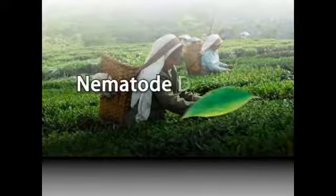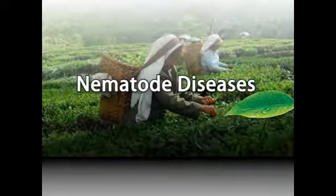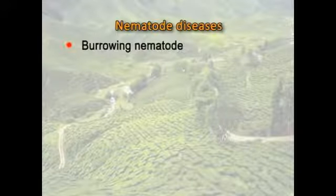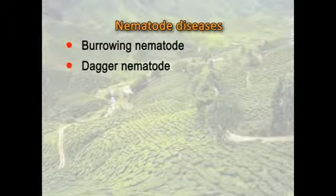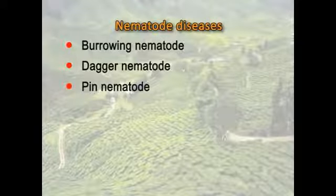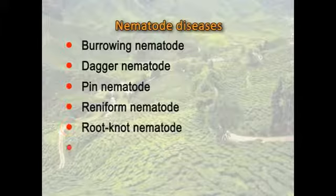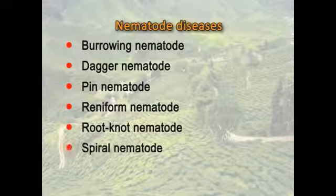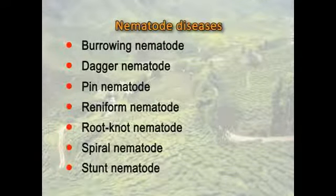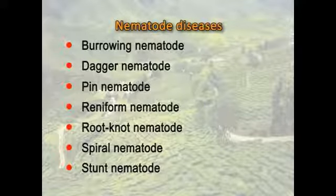Next we will discuss some of the nematode diseases affecting tea: borrowing nematode, dagger nematode, pin nematode, reniform nematode, root knot nematode, spiral nematode, and stunt nematode.